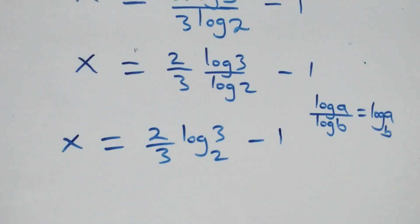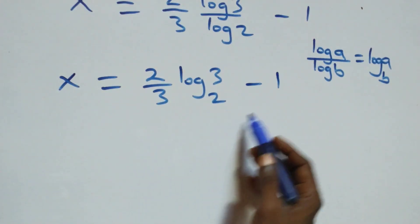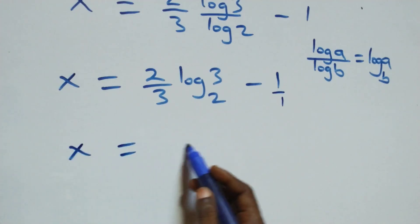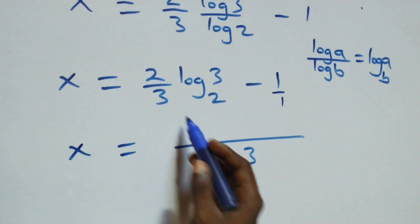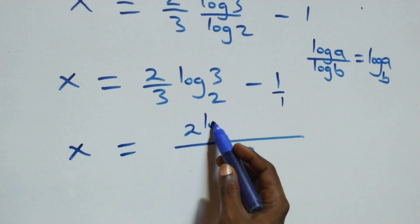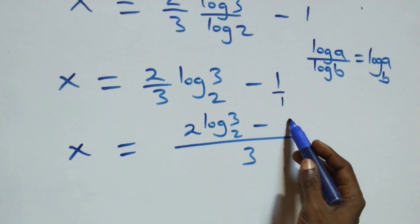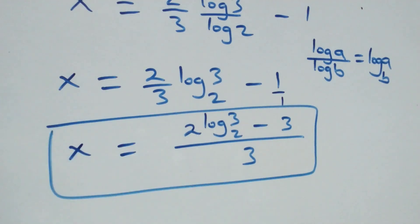We can bring this together as one fraction. We have x equals 3 in the denominator, and then 2 log base 2 of 3 minus 3 in the numerator, so here we have the value of x as 2 log base 2 of 3 minus 3, all over 3.